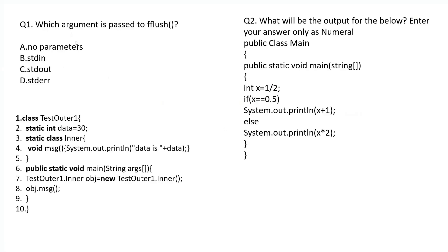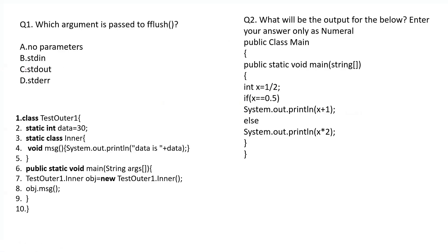The first question is: which argument is passed to fflush? Think about it, pause the video, and then resume to check your answer. The correct answer for this one will be option B.